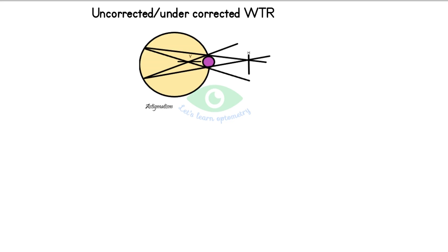So from this picture we can say that the vertical meridian is focused in front, or the horizontal focal line is focused in front. Both are the same.